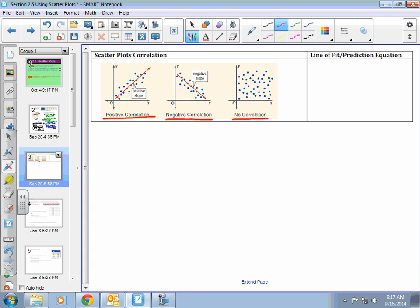The last one is no correlation. If you look at that, there are dots everywhere. There is no correlation between those points. In that case, you won't be able to find a line of best fit to predict.